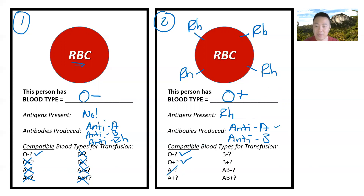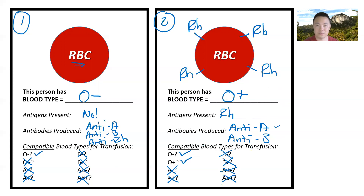A positive? It doesn't like the letter A either — no good. B negative? It doesn't like B. B positive? Doesn't like B, and doesn't like RH. AB negative and AB positive? It doesn't like A or B. So unfortunately, for blood type O positive, only O negative and O positive are compatible.